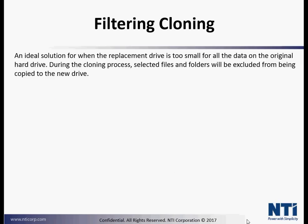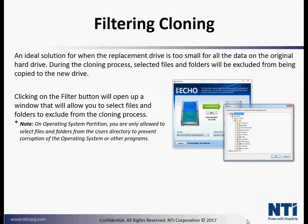Filter cloning. It is an ideal solution for when the replacement drive is too small for all the data from the original drive. During the cloning process, selected files and folders will be excluded from being copied to the new drive. Clicking the filter button will open a window that will allow you to select files and folders to be excluded from the cloning process. Note that on the operating system partition, you are only allowed to select files and folders from the user directory to prevent corruption of the operating system or other programs.